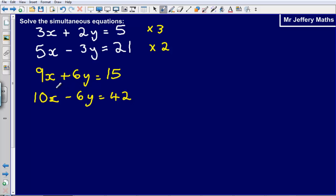So what I am going to do here is I am going to add the two equations together. In adding them together what will happen is that y term will disappear. So 9x plus 10x is going to give me 19x and I have got 6y plus minus 6y and that just cancels itself out. And then I have got 15 plus 42 which gives me 57.